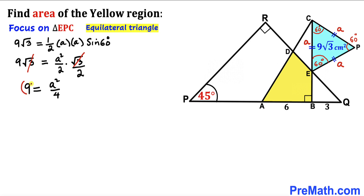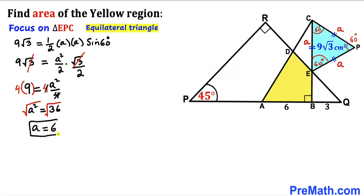Multiplying both sides by 4 gives a² = 36. Taking the square root of both sides, a equals positive 6 centimeters. So all side lengths of the blue equilateral triangle are 6 centimeters.